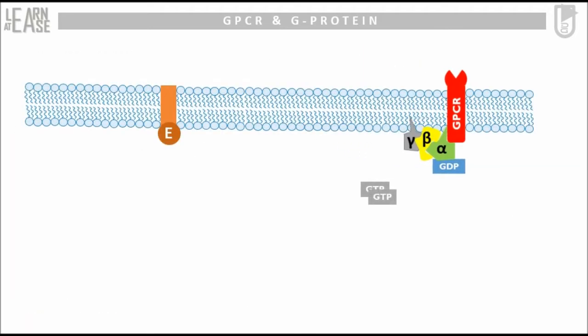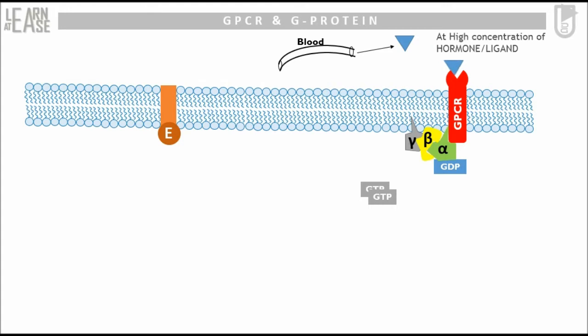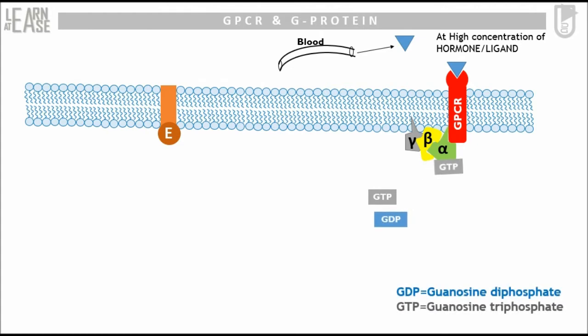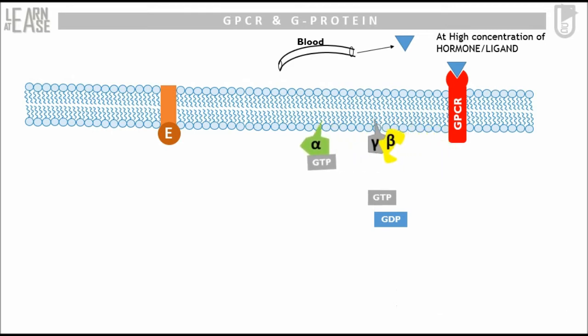In the animation, the GPCR and G-protein are shown in their native inactive form. The hormone or ligand from the blood will bind to its GPCR when its concentration is high enough. This will cause a conformational change in GPCR, which will then cause the alpha subunit to exchange its GDP with GTP. Note that GDP is guanosine diphosphate and GTP is guanosine triphosphate. By this, the alpha subunit gets activated and releases itself from GPCR, leaving the gamma-beta dimer.